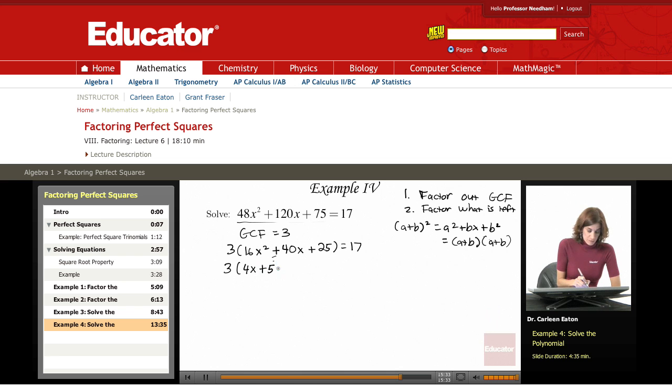This is going to give me 4x plus 5 squared equals 17. Then, use the square root property,